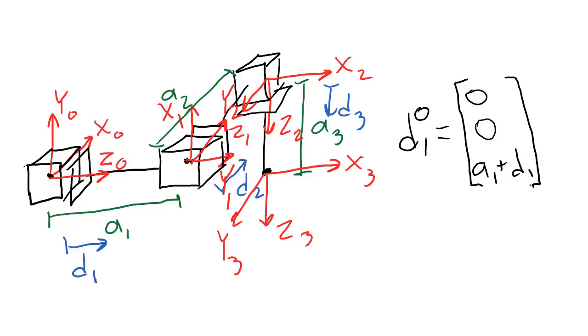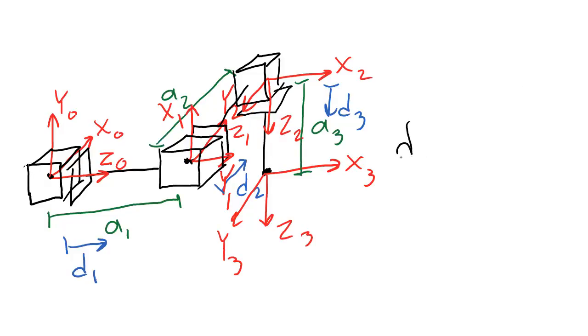In the z0 direction, the displacement is a1 plus d1. d1 is the amount that the joint has extended, and a1 is the distance between these two frames when d1 is 0.